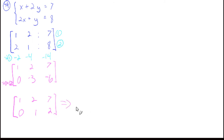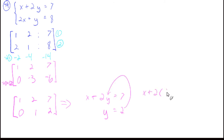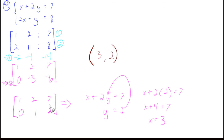We're almost done — we just need to get this into row echelon form by making the leading entry 1. We divide row 2 by negative 3: 0, 1, and 2. This represents: x plus 2y equals 7, and y equals 2. So by back substitution: x plus 2 times 2 equals 7, x plus 4 equals 7, x equals 3. The solution is (3, 2).